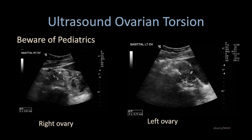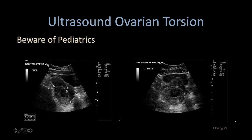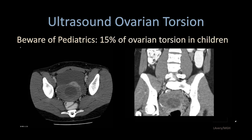Beware of pediatrics — this is a difficult diagnosis frequently because of the inability to perform transvaginal imaging. Here we have transabdominal imaging with the right and left ovaries marked. However, in the midline we see a large heterogeneous echogenic structure with mixed echogenicity, near the fundus and lower uterine segment — very difficult to characterize. But at CT, it's easy to identify this as a large torsed ovary down posterior into the cul-de-sac, with the measured structure likely representing the twisted vascular pedicle.